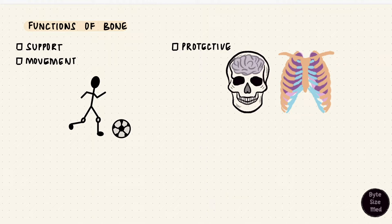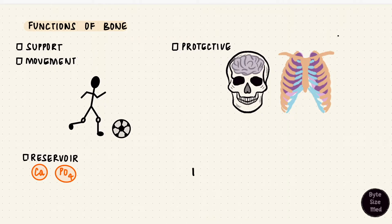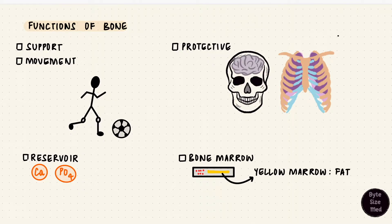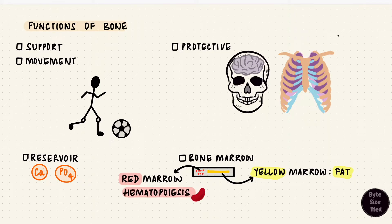Bone is made up of calcium phosphate and other minerals, so it's a source of these ions — it acts as a reservoir and can give the body these ions when it needs them. Also, inside bone you have marrow: red and yellow marrow. Yellow is fat, and red is important for hematopoiesis — that's the formation of blood cells. So bone is more than just support.